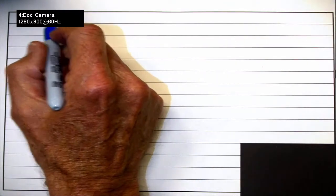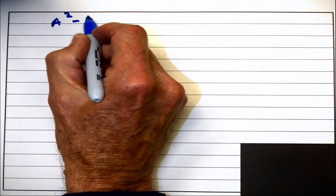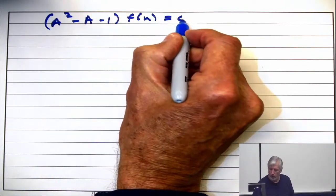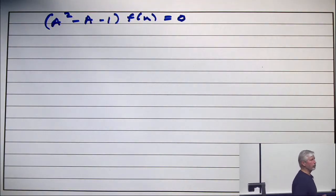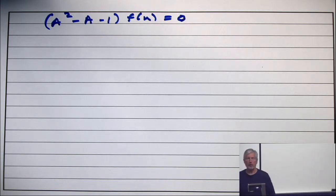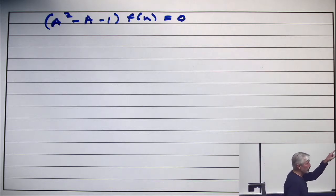So the Fibonacci sequence has as its recurrence A squared minus A minus 1 times f(n) equals 0. Does everybody see why that's the recurrence? Remember, the recurrence is that the next term is the sum of the preceding 2. So if you take the second term and subtract the one right in front of it and subtract the one in front of that, you get 0. What are the roots of this?